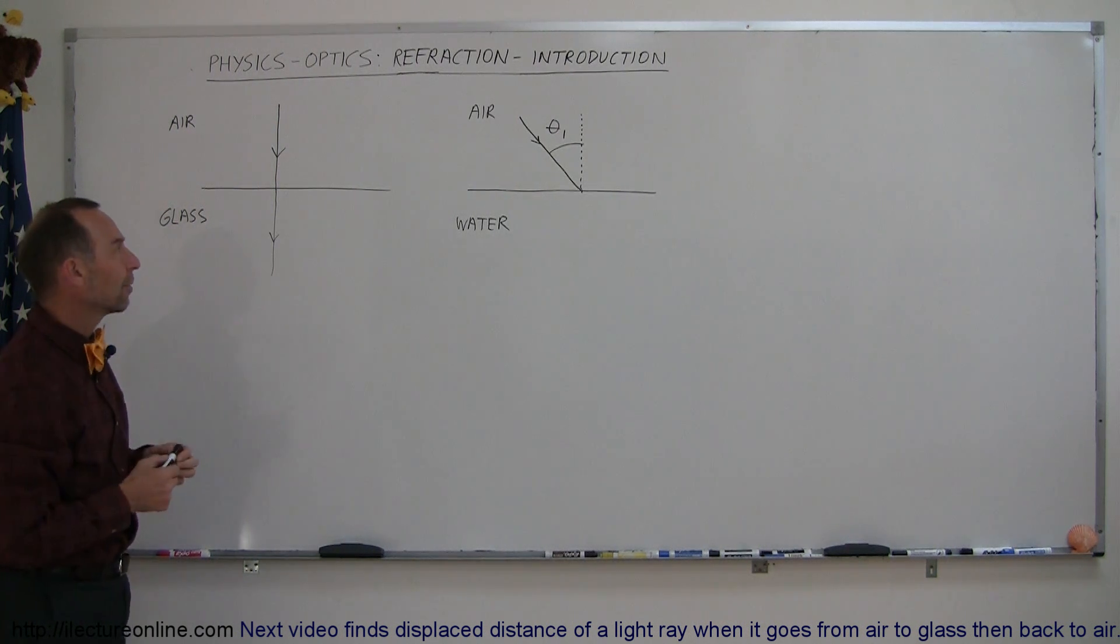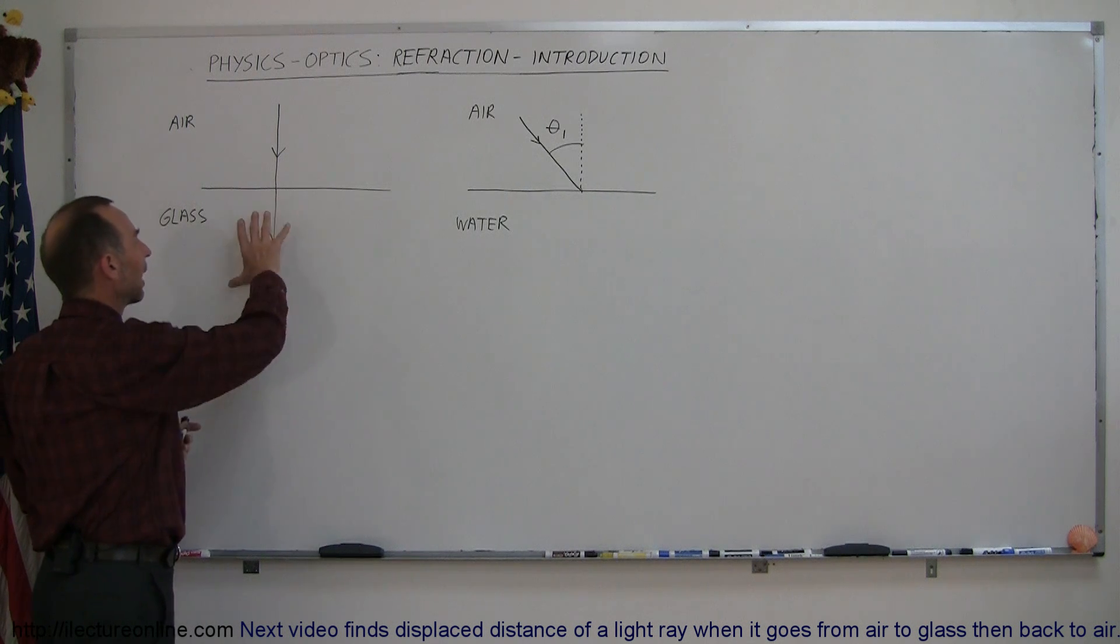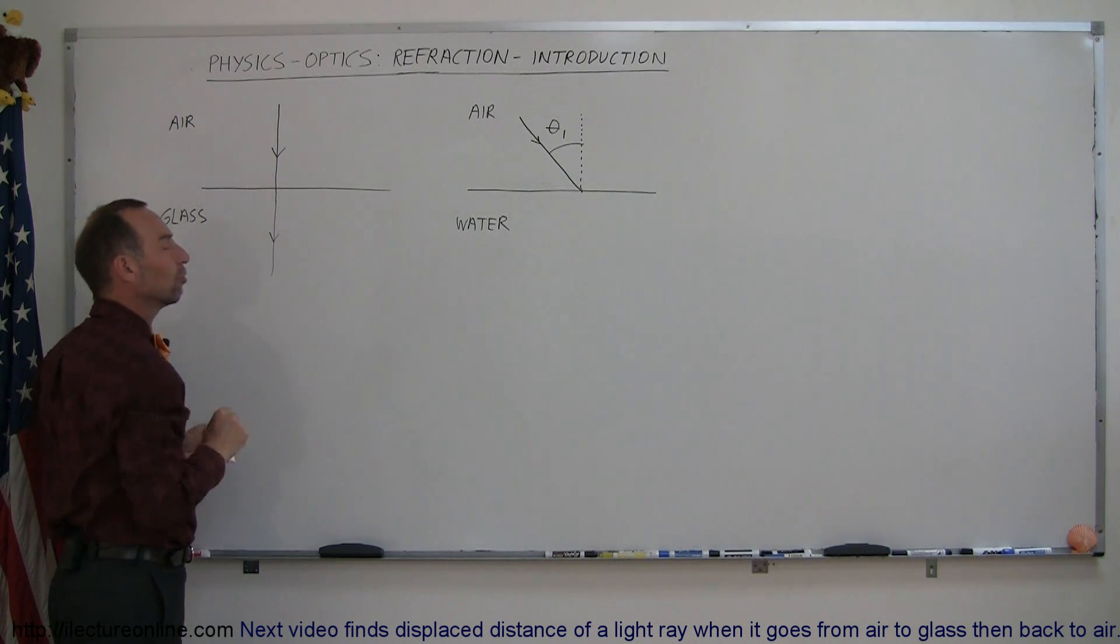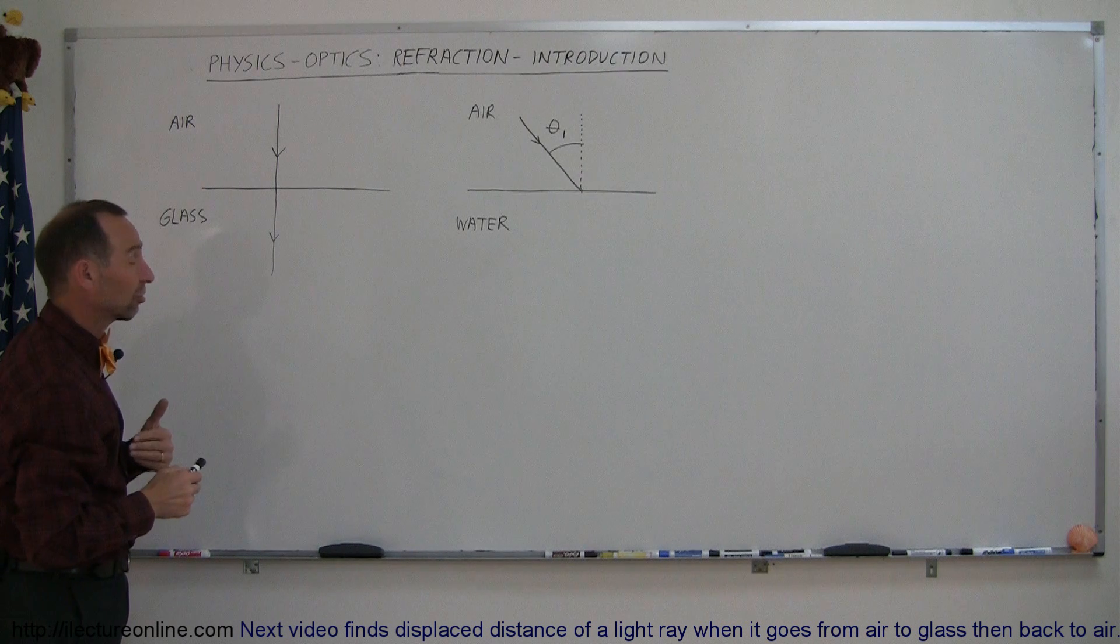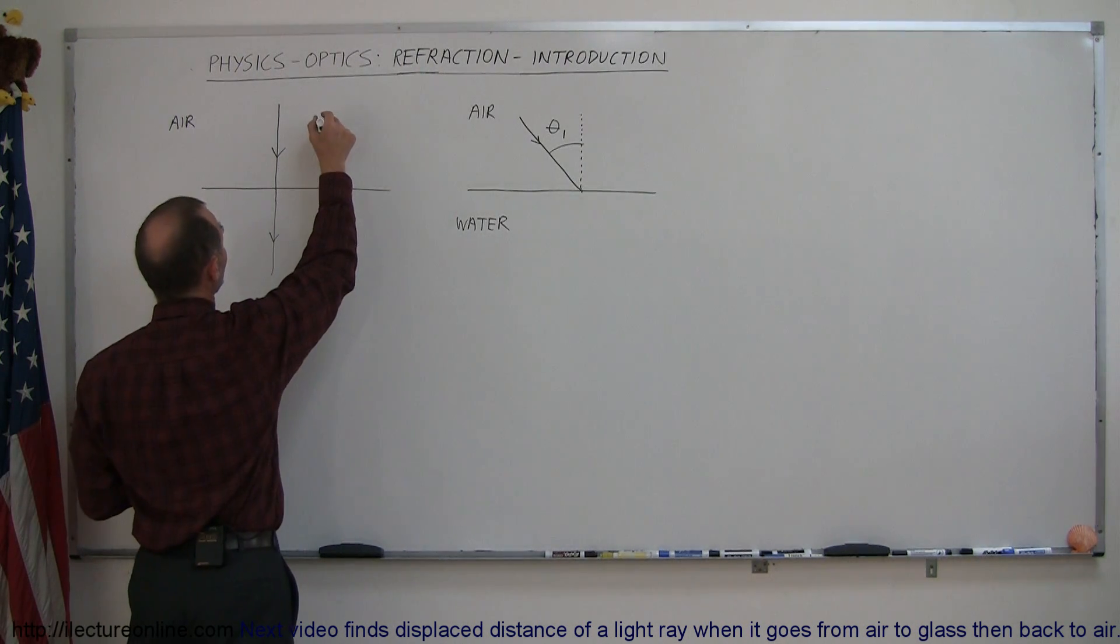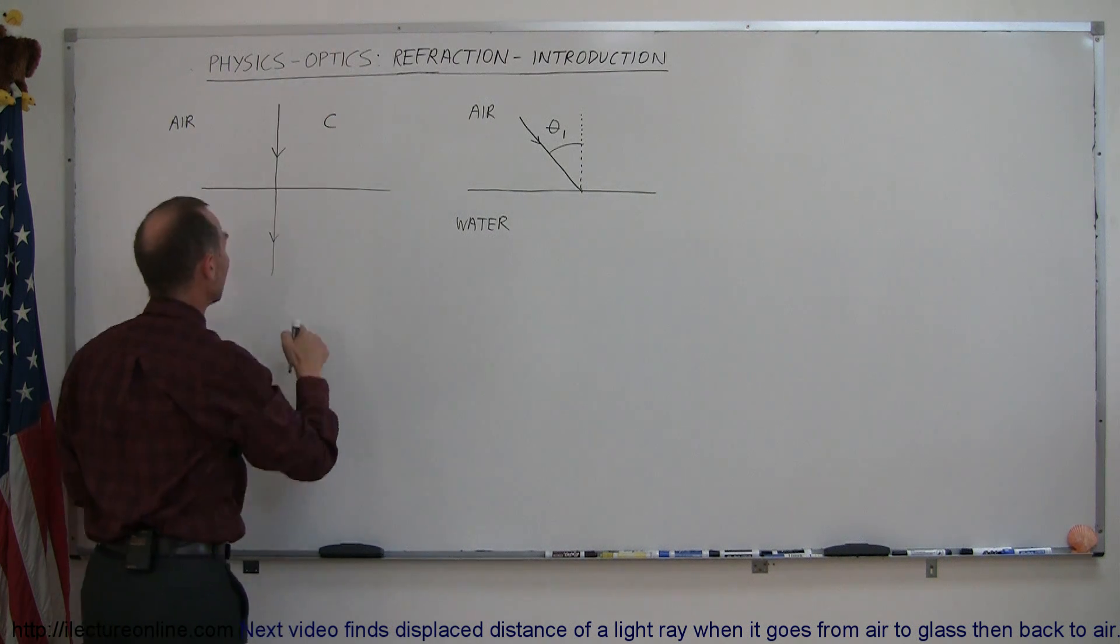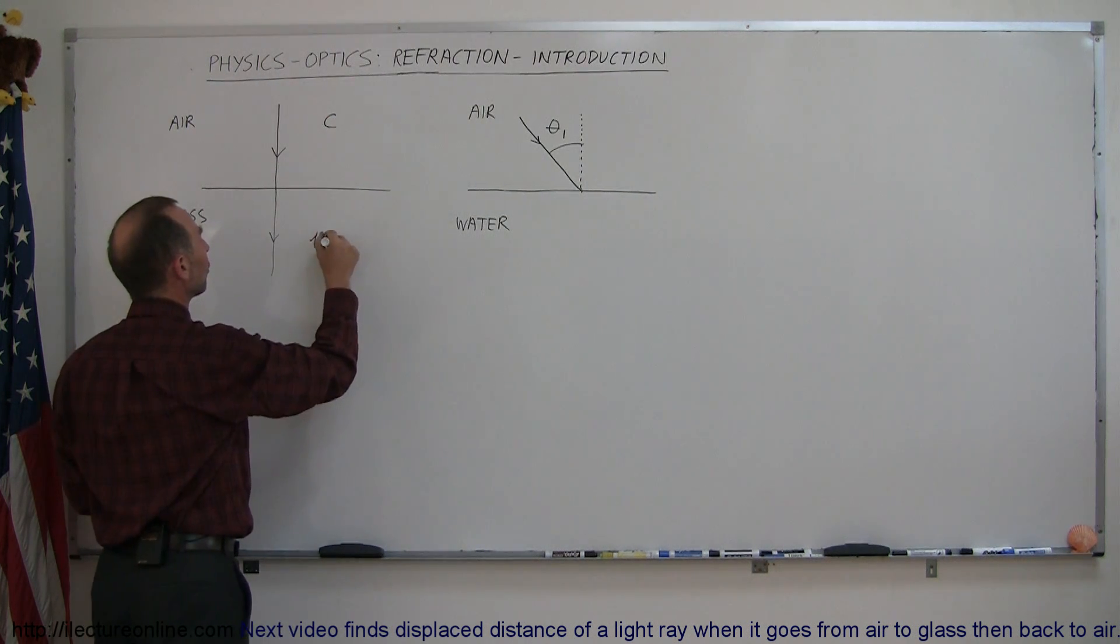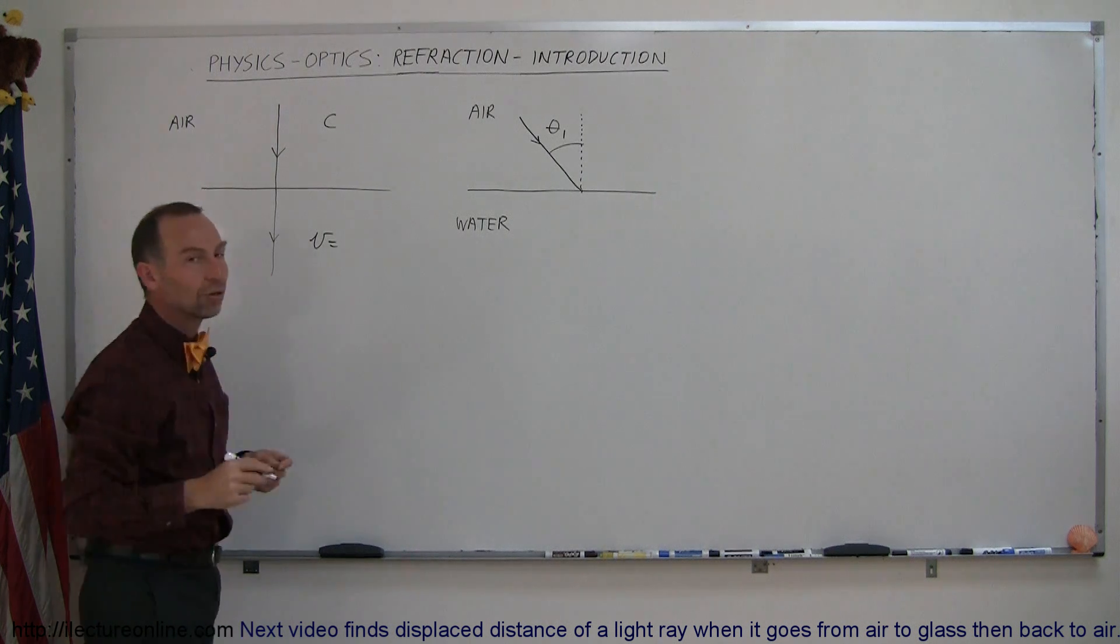The reason why something happens is that there's some property about glass that does something to the speed of light as it travels through it. It actually slows light down. If we know that the speed of light right here is equal to c when light is traveling in the air, what is the speed of light equal to once it traverses into glass?